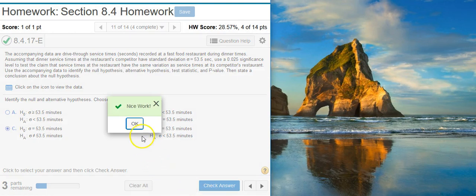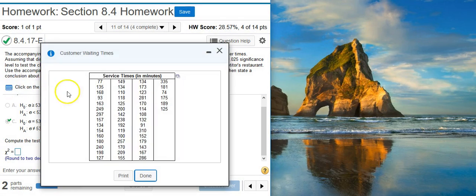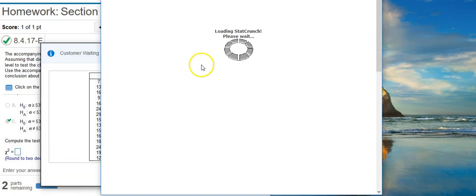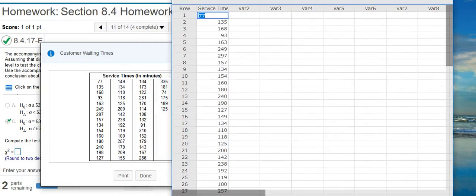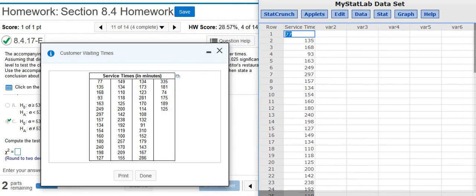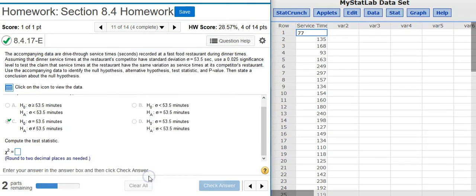Nice work! Now we're asked to compute the test statistic, and to do this, we have to actually run the hypothesis test. So, we're going to click on this icon here to take a look at our data, and then click on this icon to open up our data in StatCrunch. Okay, we've got our data here in StatCrunch. We're going to resize this so we can see more of what's going on, and we don't need this window anymore.